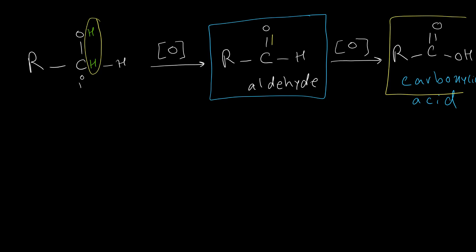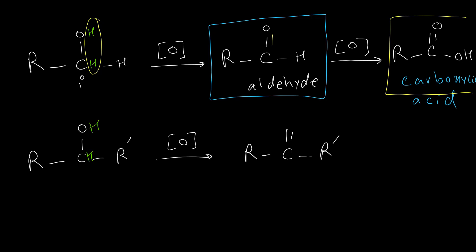So depending on the oxidizing agent, we may have aldehyde as a product or we may have carboxylic acid. If we have a secondary alcohol, then oxidation of secondary alcohol only produces one product — the single bond C-O converts to the double bond, so we have a ketone as a product. Again, these two hydrogens will eliminate from our structure, so this alcohol was secondary because this carbon was a secondary carbon.